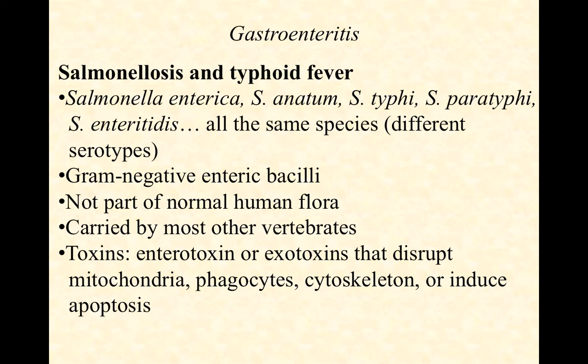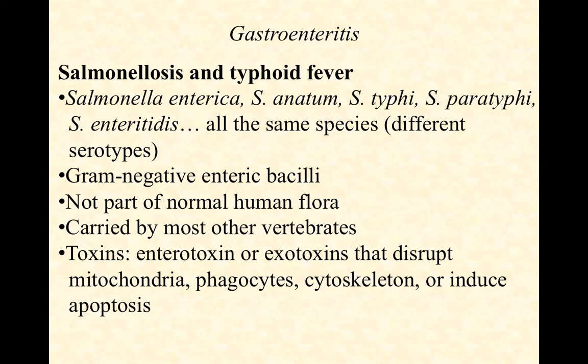Salmonella can cause two different diseases: Salmonellosis and typhoid fever. There are multiple names for Salmonella species, but it's very likely they are all the same species, just different strains or serotypes. One textbook might call them all Salmonella enterica, whereas another might call them Salmonella anatom or enterotitis. The difference is at the strain level, a finer distinction.